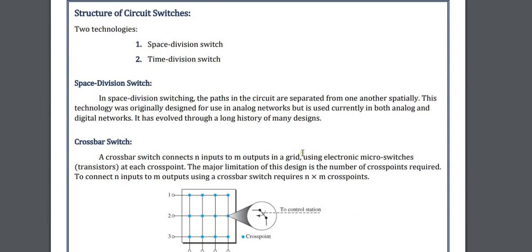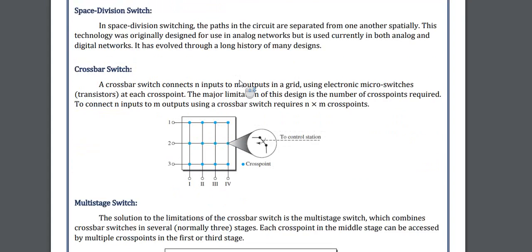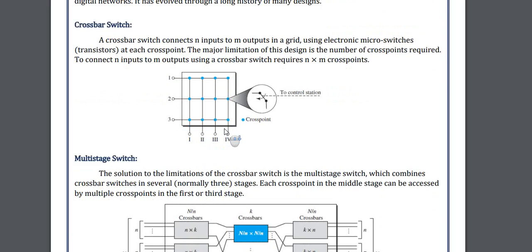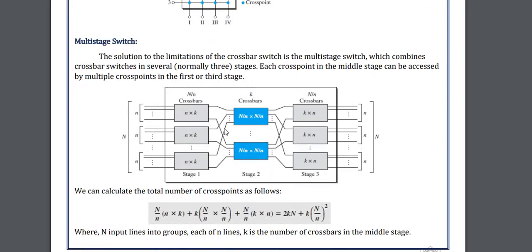Now the structure of circuit switching. In this technology we have space division switching and time division switching. If we divide by space it is known as space division switching, where space is the major factor. In time division switching, time is the major factor. Now multi-stage switching — here we are switching from one section to another section in multiple stages, so this is known as multi-stage switching.